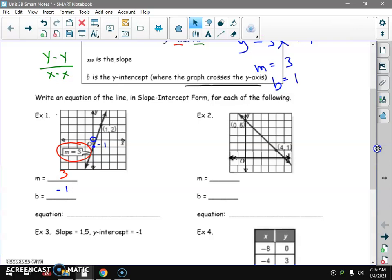So now we put into our equation. Y equals, and what's our M? 3. We get the X. And B is minus 1. And there's the equation. There's the equation of that graph right there. Alright, number 2.